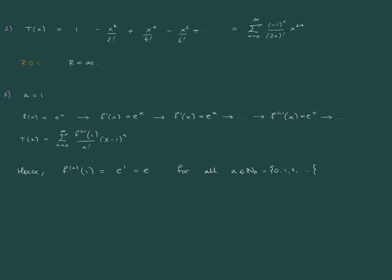So just plugging this into the formula now, we get sum n equals 0 to infinity e/n! * (x-1)^n. And that's it. We have found the Taylor series expansion around 1 of e^x.